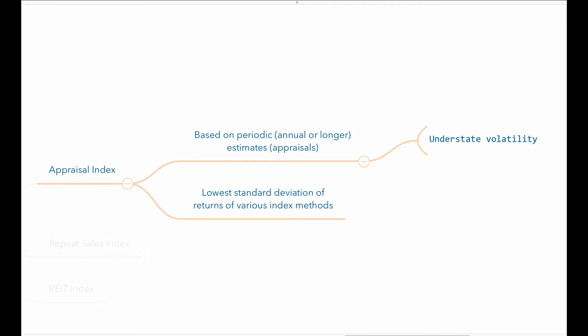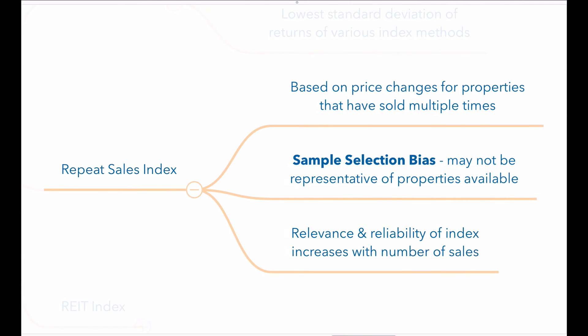Repeat sales indices use the repeat sales of properties to construct the indices. The change in prices of properties with repeat sales are measured and used to construct the index. The problem with repeat sales indices is that they suffer from what's called a sample selection bias, because the properties that sell in each period vary and may not be representative of properties available.